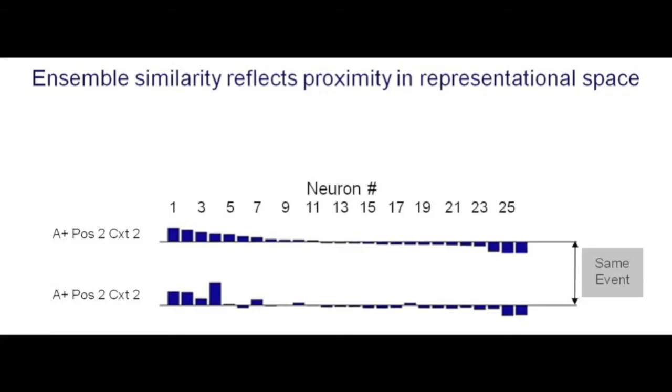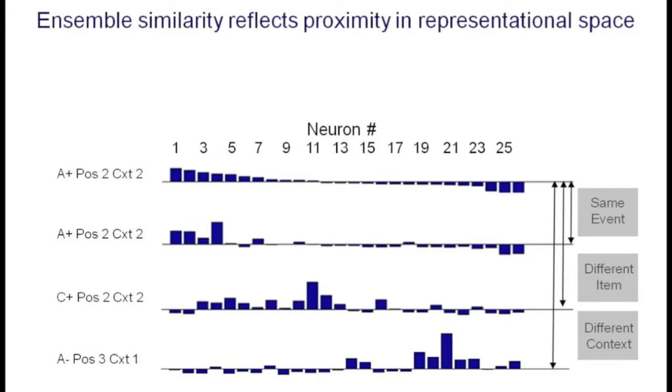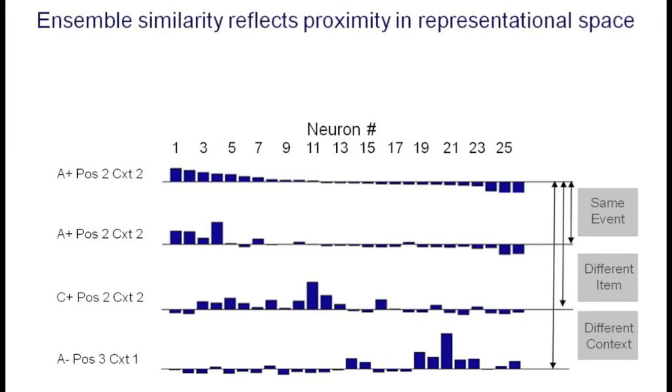Repetitions of the same item in the same position elicited similar patterns of activity. Trials with different items are associated with divergent patterns of activity. While trials that occurred in different contexts showed nearly opposite representations, with the cells that were active in one context being silenced in the other.